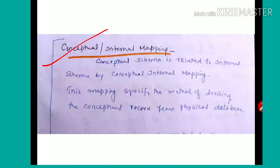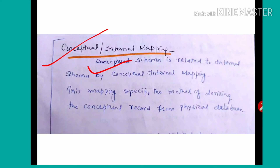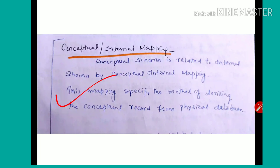Next is conceptual and internal mapping. Conceptual schema is related to the internal schema by conceptual-internal mapping. In the conceptual schema, the records created by programs have corresponding records created in internal storage. Conceptual-internal mapping specifies the method of deriving the conceptual record from the physical database, providing a method to access data through the physical database.